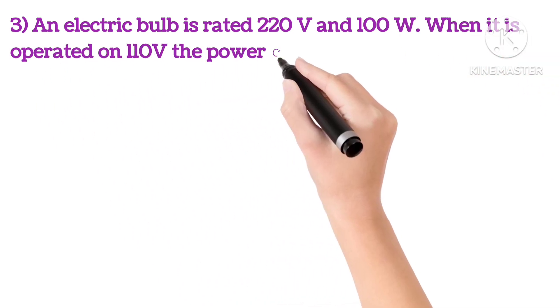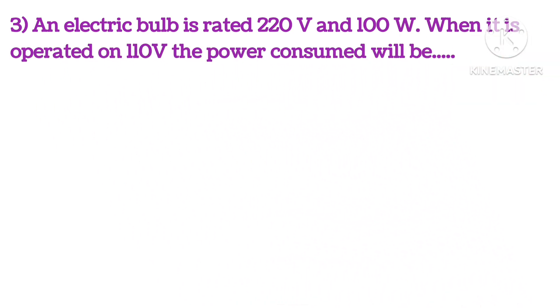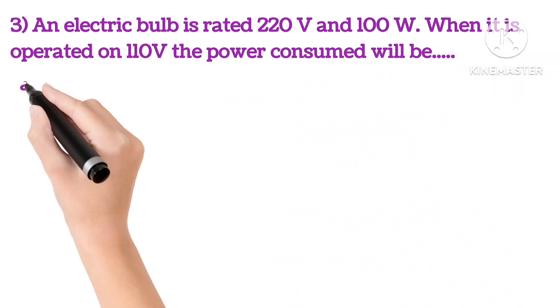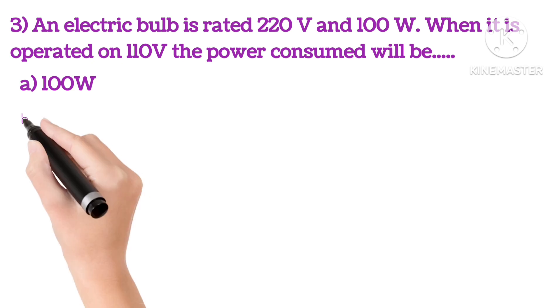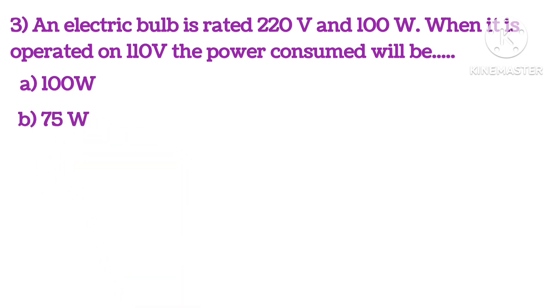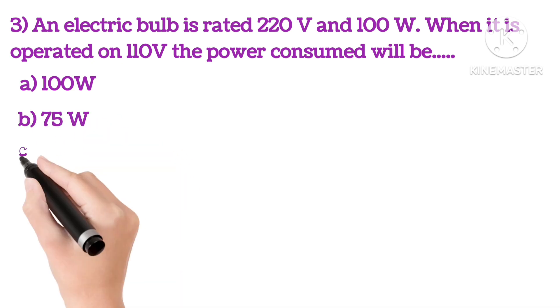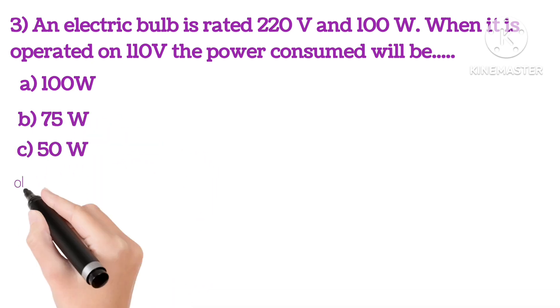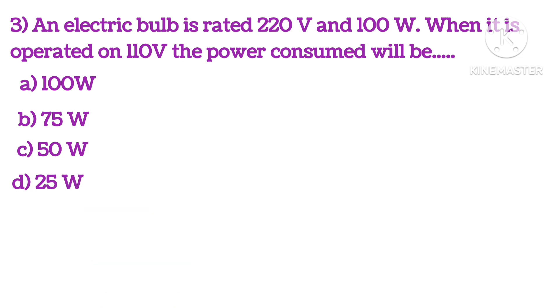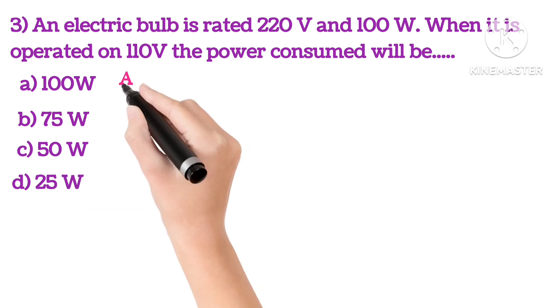Third: an electric bulb is rated 220 volts and 100 watts. When it is operated on 110 V, the power consumed will be 100 watts, 75 watts, 50 watts or 25 watts.